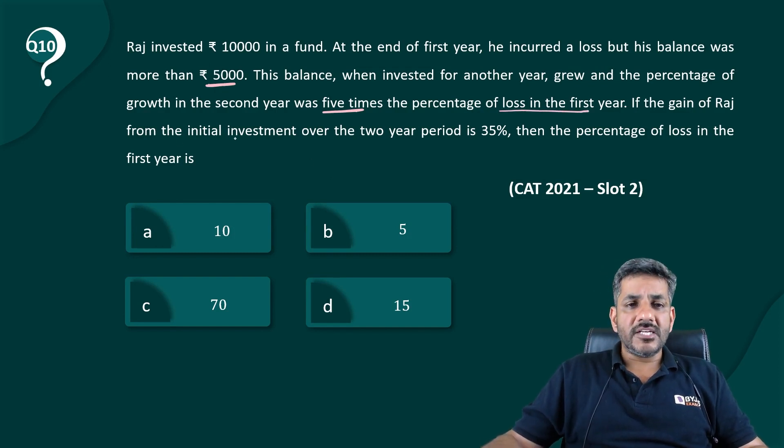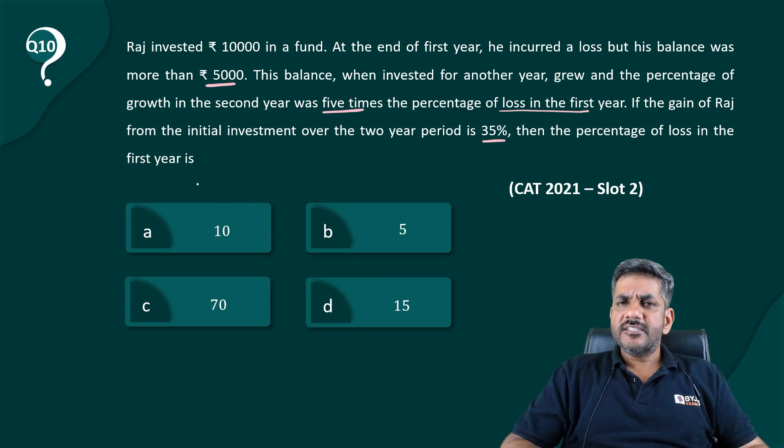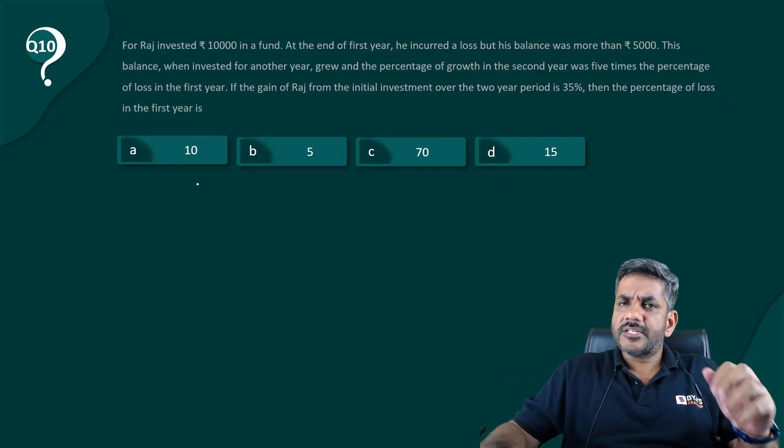If the gain of Raj from the initial investment over the two year period was 35%, then the percentage of loss in the first year. While doing these questions, you should always be making a picture in your mind.